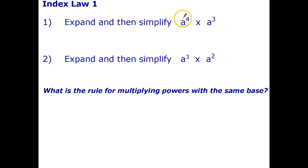Expand and then simplify a to the fourth times a cubed. Let's go ahead and expand that. So a to the fourth is a by a by a by a. That's a to the fourth, and times a to the third is a by a by a. That's now in expanded form and all together I have seven a's multiplied together.